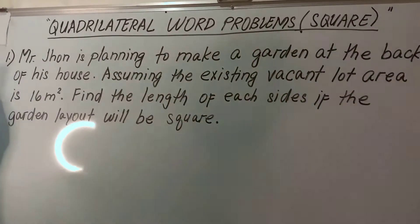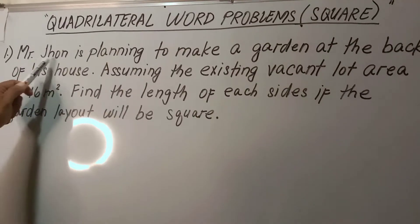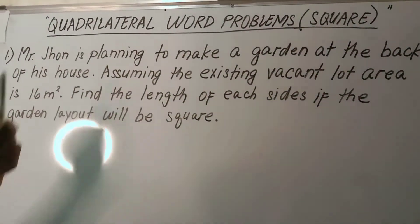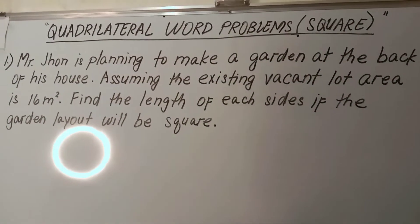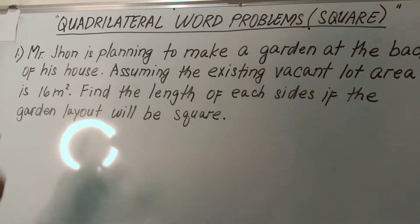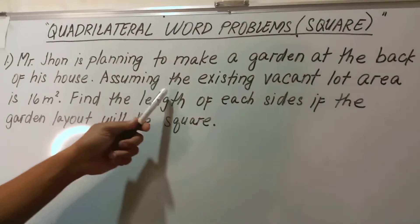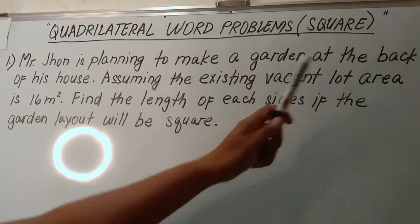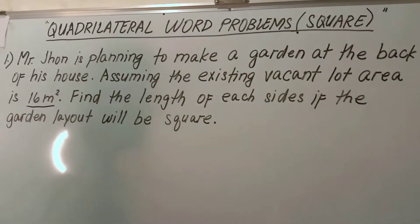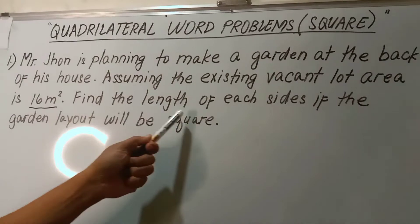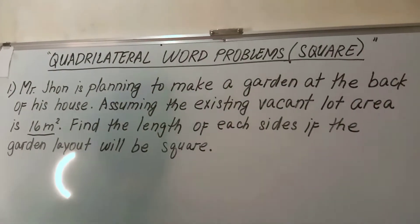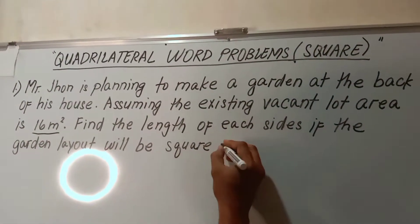So as you can see here, it states that Mr. John is planning to make a garden at the back of his house. Assuming the existing vacant flat area is 16 square centimeters, find the length of each side if the garden layout will be a square type.